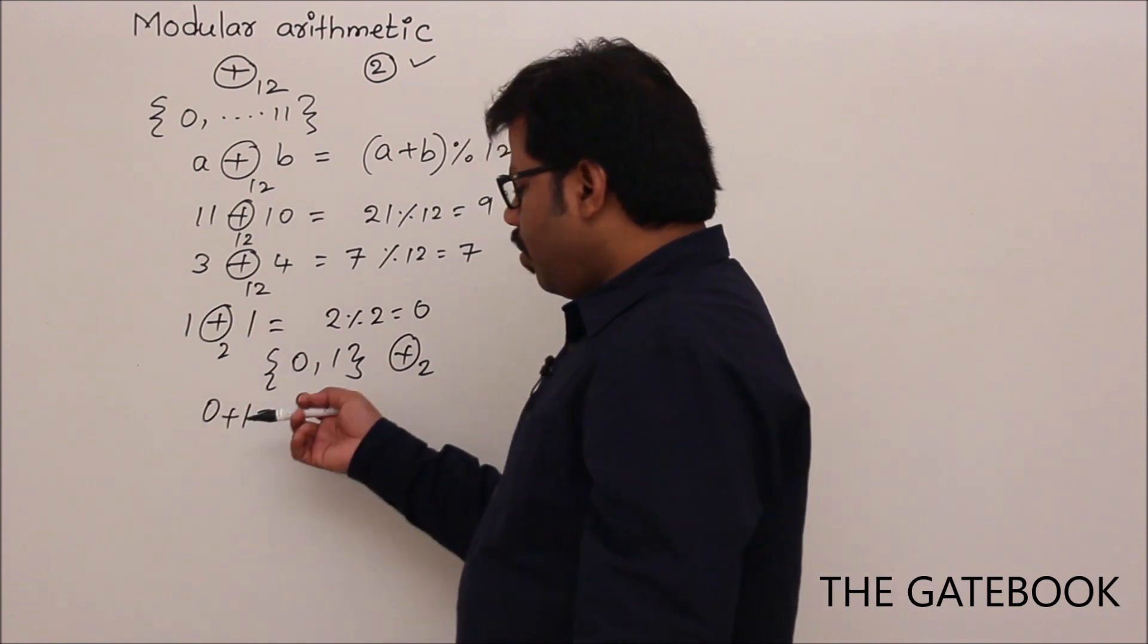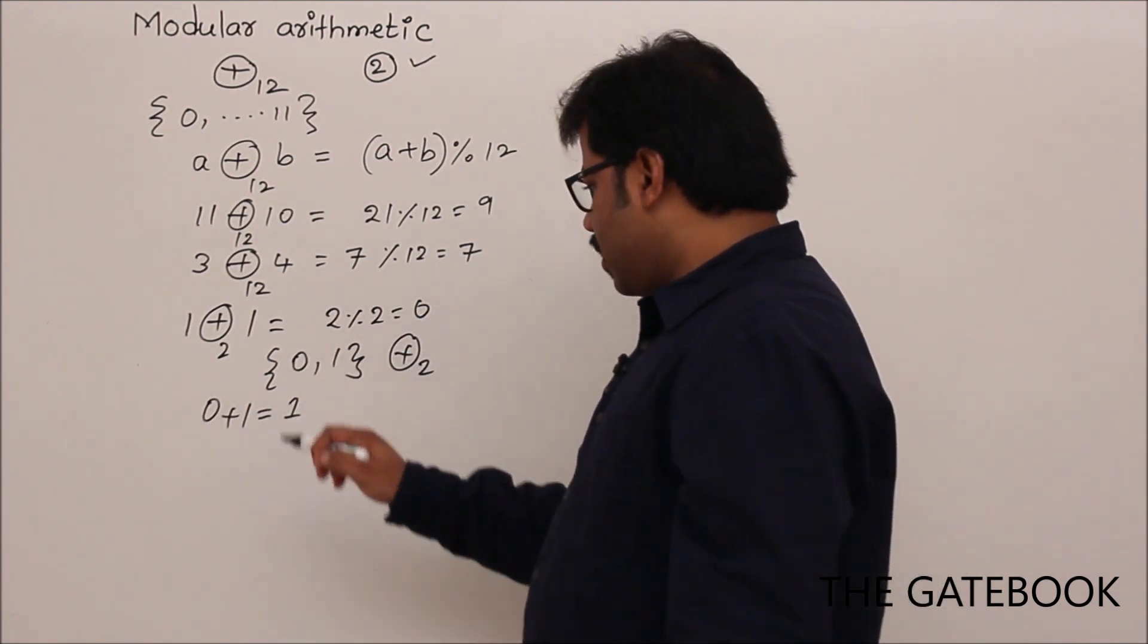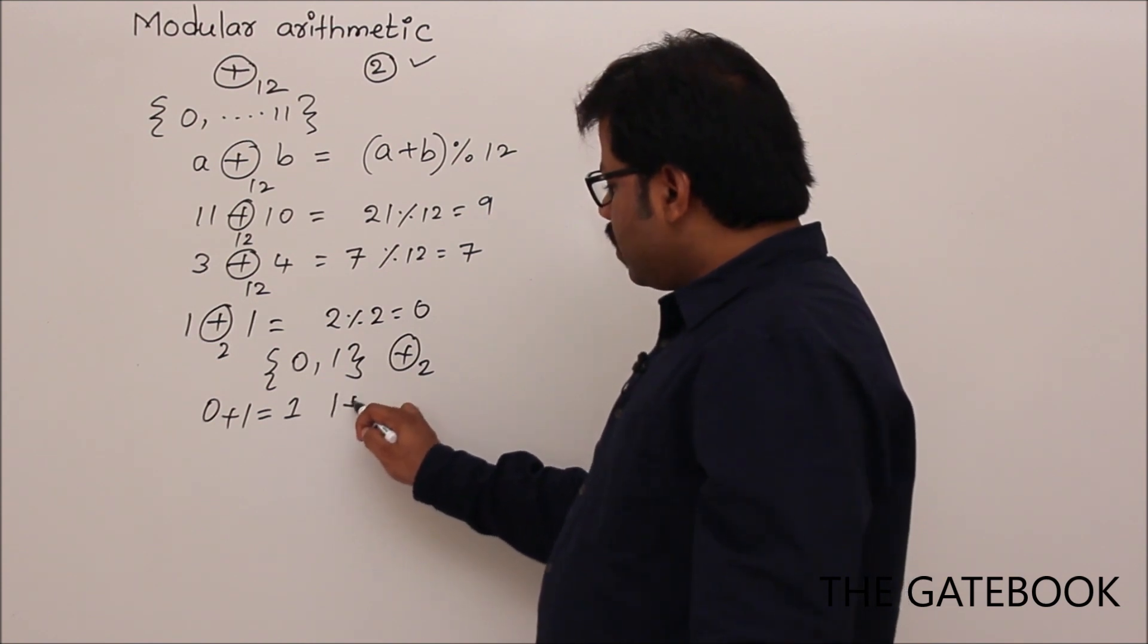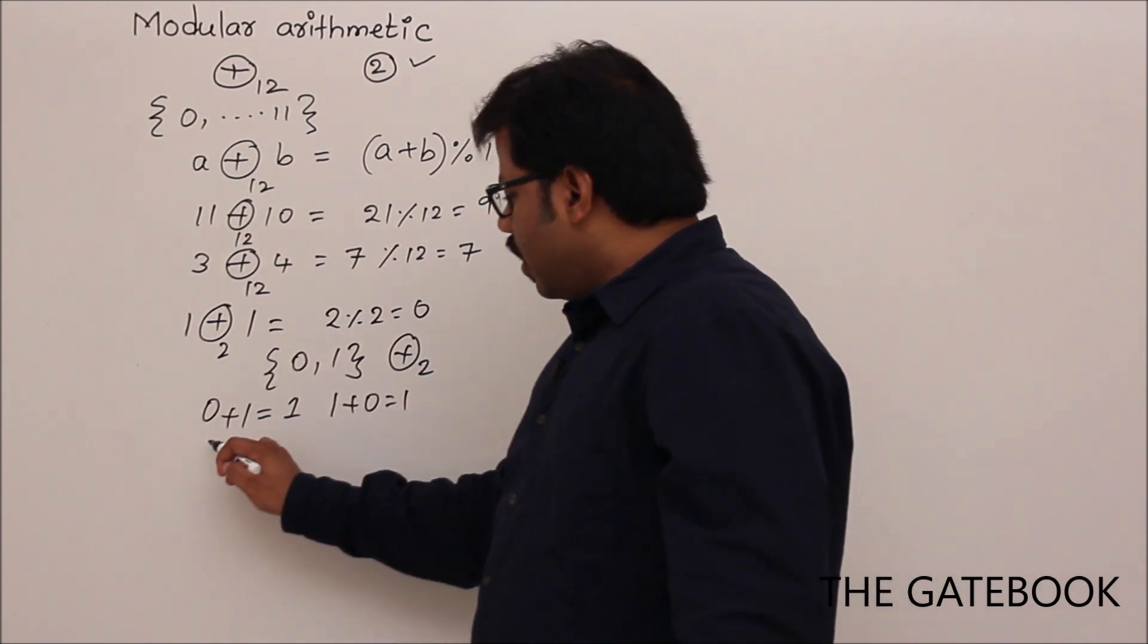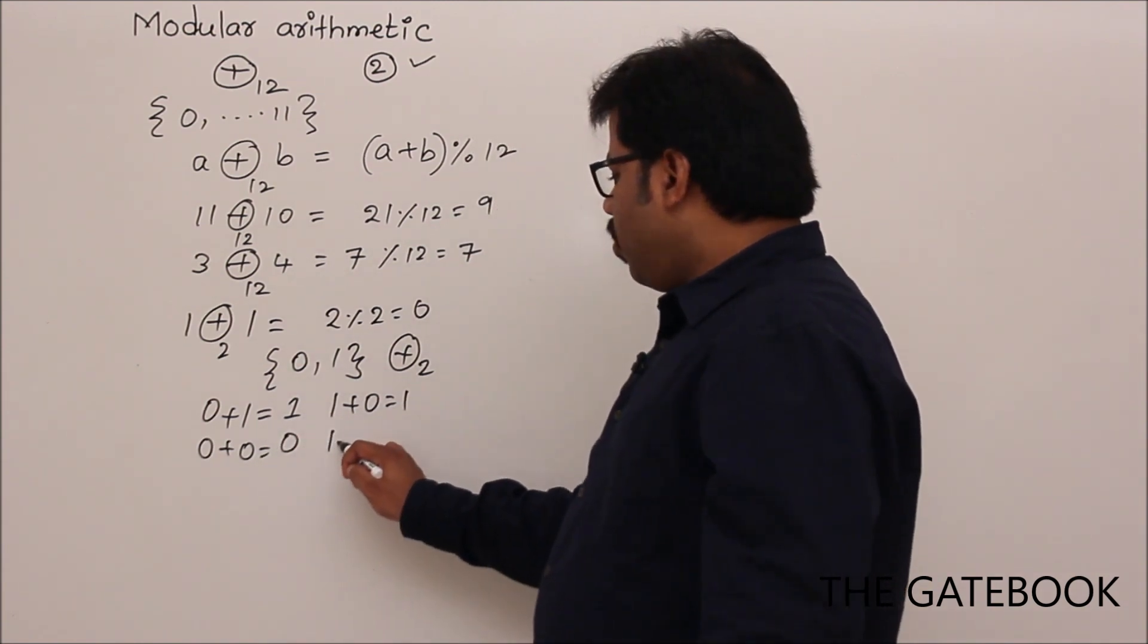0 plus 1. Because it falls into the same domain, then you don't need to apply percentile. So similarly, 1 plus 0 will be 1. Now, the other combinations, if you see 0 plus 0 is 0.